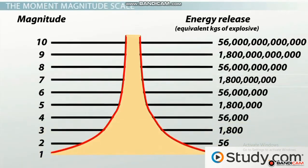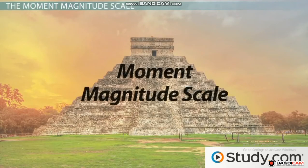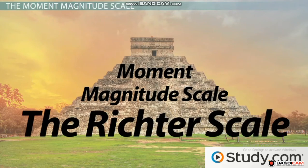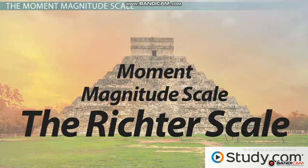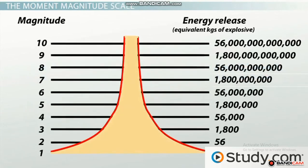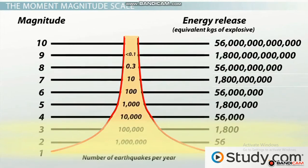The Richter Scale was originally designed to measure medium-sized earthquakes, those between magnitude three and seven, and within a distance of about 400 miles. The Moment Magnitude Scale was created in 1979 to deal with these issues, but it built on the Richter Scale because it was already so accurate for small to medium-sized quakes. The Moment Magnitude Scale is the currently accepted scale used to measure medium to large-sized earthquakes. The Richter Scale remains the standard for quakes smaller than 3.5 in magnitude, and luckily this is where most earthquakes fall on the scale.